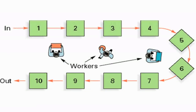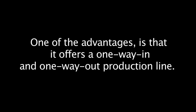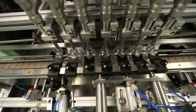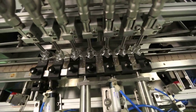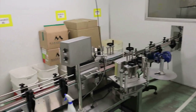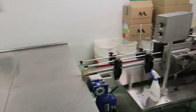The liquid filling lines are in a U-shape production layout. The U-shape offers great flexibility on an assembly-style line, including a one-way in and one-way out production line. The production line consists of a filler and capper machine, which is enclosed in a pressurized lock to prevent any cross-contamination. This room is a sterile environment to comply with regulations.